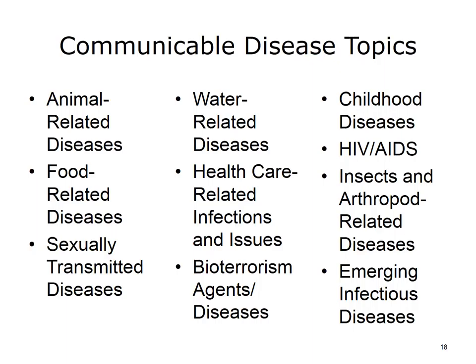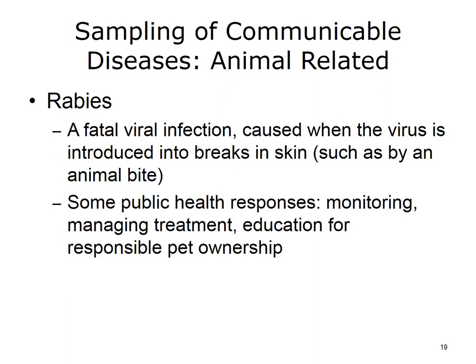This listing of some communicable disease topics gives a good idea of the diversity involved. Rabies is a good example of an animal-related disease. A fatal infection results when the virus is introduced into breaks in the skin, commonly by an animal bite. Public health responses include monitoring for incidents, managing treatment, and encouraging prevention by pet vaccinations.